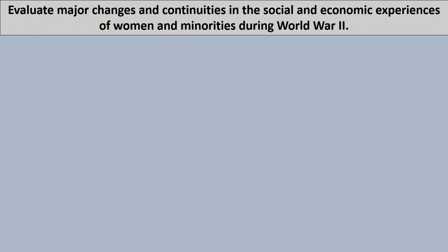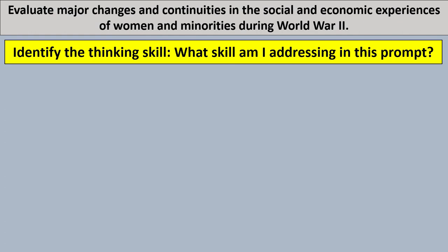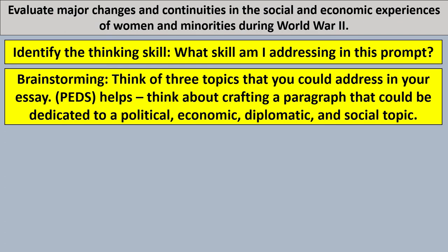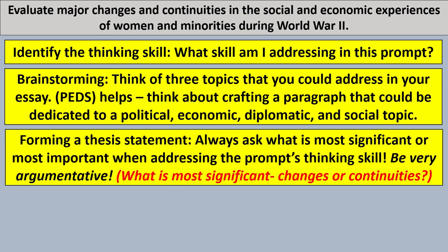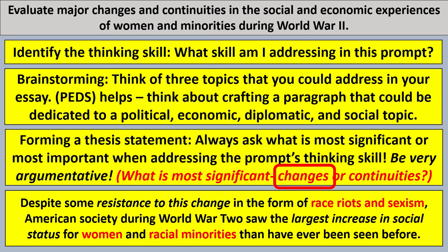Another example. Evaluate major changes and continuities in the social and economic experiences of women and minorities during World War II. So, again, identify the thinking skill for this one. You can see changes and continuities. We know it's going to be change over time and continuities. Think of brainstorming. Then begin your thesis formula and your thesis statements. Think about that formula. What is most significant? Changes or continuities? Probably changes. So, here's your example. Despite some resistance to this change in the form of race riots and sexism, American society during World War II saw the largest increase in social status for women and racial minorities that had ever been seen before.